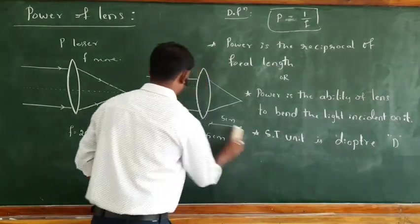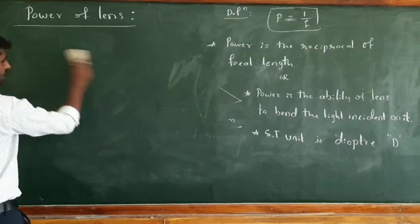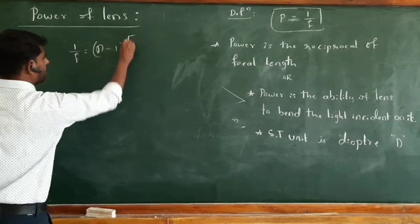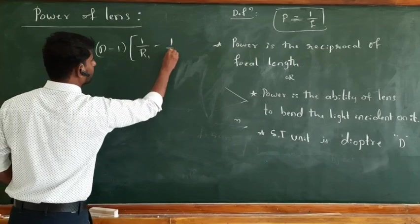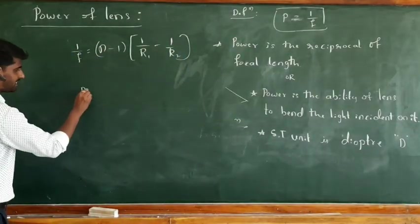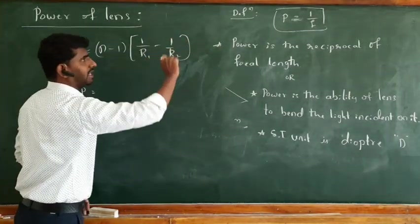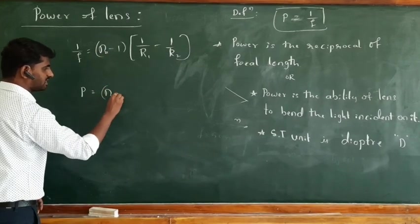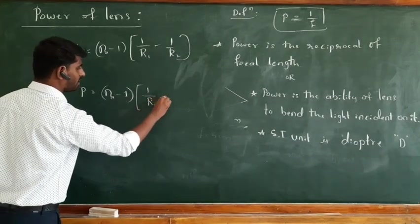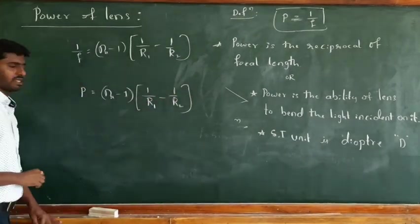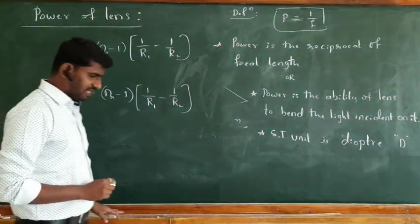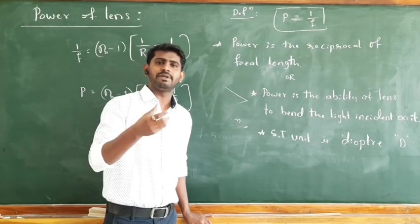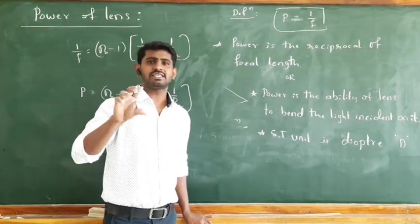From the Lens Maker's formula, 1/f equals (refractive index minus 1) into (1/R1 minus 1/R2). Since power is the reciprocal of focal length, power P equals (refractive index of the second medium with respect to the first, minus 1) into (1/R1 minus 1/R2).